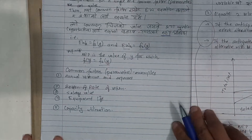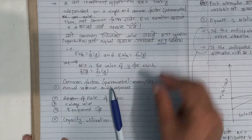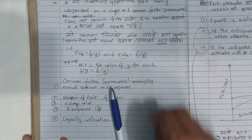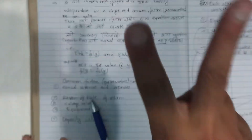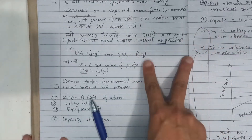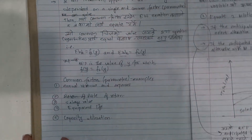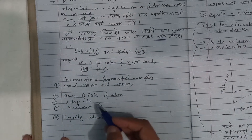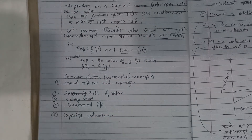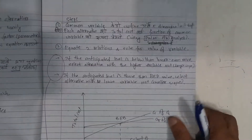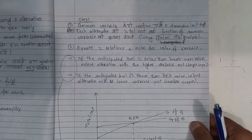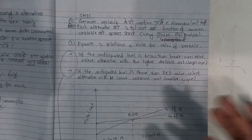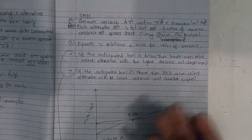The common variable is defined — for example, operation hours. Other possible common variables include revenue and expenses, rate of return, salvage value, life capacity utilization, and operating hours. The dimensional unit of the common variable — such as operation utilization hours — is defined clearly.